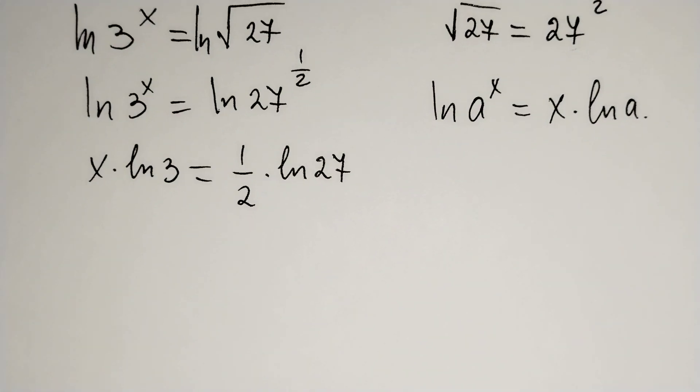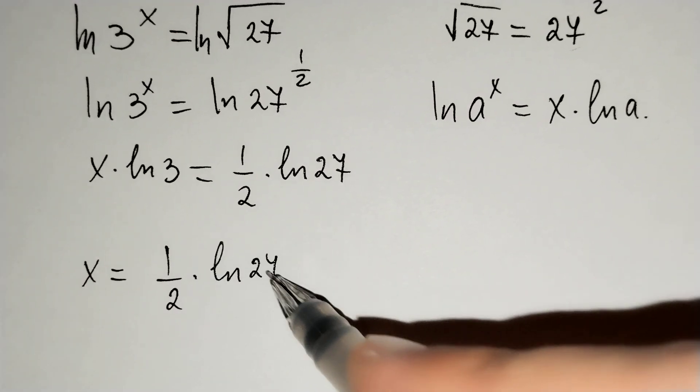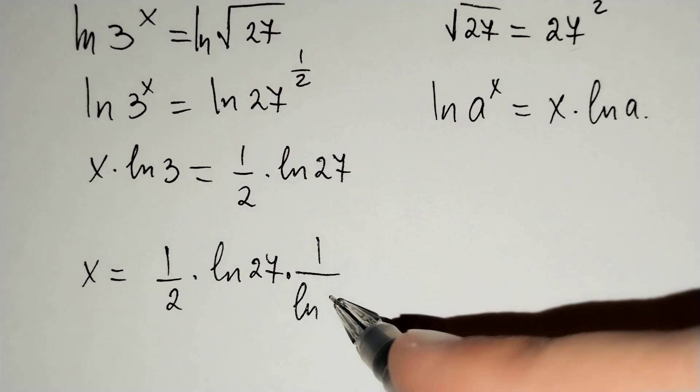If we solve for x, x equals (1/2 times ln(27)) divided by ln(3).